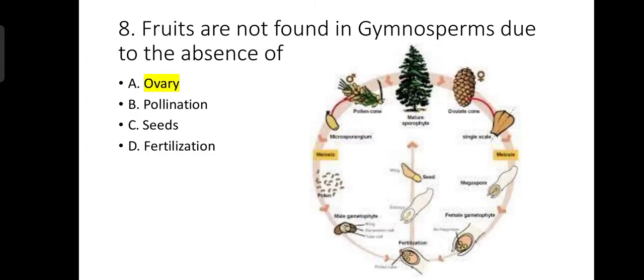Number 8: Fruits are not found in gymnosperms due to the absence of ovary. In this question there was a mistake — they asked about the presence instead of absence, so many candidates became confused. But they revised the key and everyone got the mark for this question.